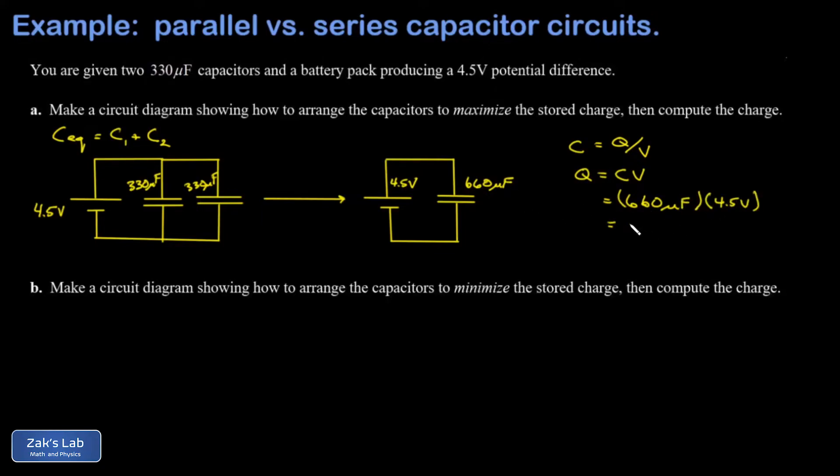When I run the numbers on this, I get 2970 microcoulombs. So we allowed that factor of 10 to the negative six that micro to be a spectator, and I just multiplied 660 times 4.5. Now a better idea would be to shift the decimal place three times and call this 2.97 millicoulombs.